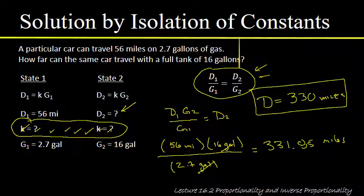Rounded to two significant figures, the distance is 330 miles — identical to our two-step answer. In the study guide, try solving the proportionality problems both ways and see if you get the same results. It's amazingly satisfying and I highly recommend it for both the educational benefits and the sheer satisfaction.